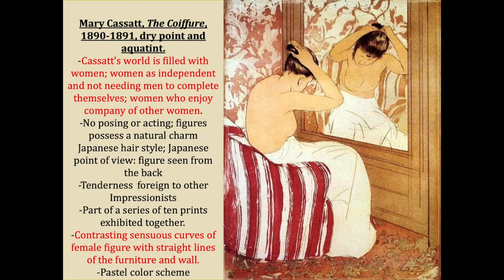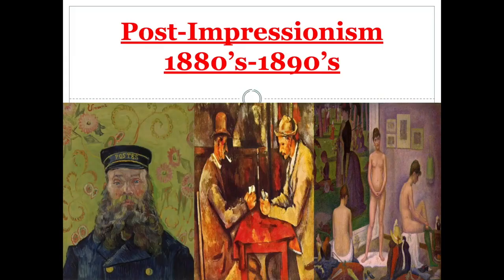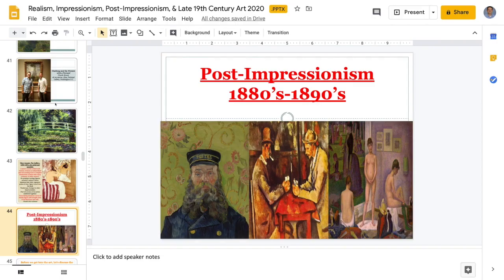Women in Cassatt's work enjoy each other's company, are not posing or acting, and possess a natural charm. She is also influenced by Japanese art — the Japanese hairstyle, and the point of view common in Japanese images: a rear-but-to-the-side angle. With a mirror used in the scene, we see the tenderness of a woman quietly getting ready for a bath. This was part of a series of ten prints showing various aspects of a woman's life, with contrasting sensuous curves of the body against the straight lines of furniture and wall — softness of a woman against the harshness of the real world — in a pastel color scheme. That's it for this video; next we cover post-impressionism, art nouveau, symbolism, and some sculpture and architecture.